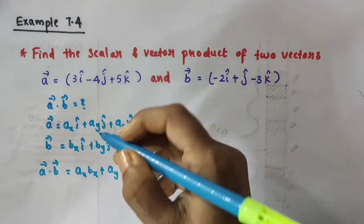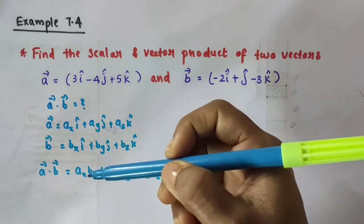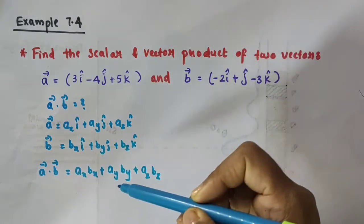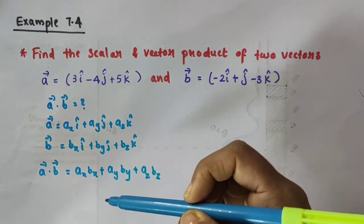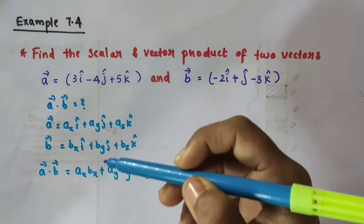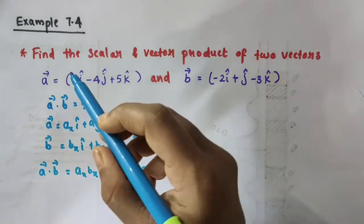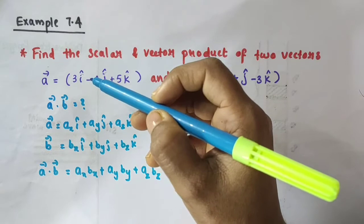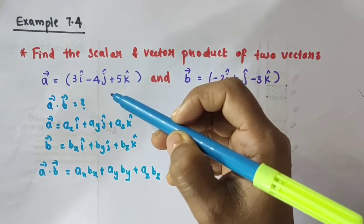We have discussed about the scalar product or dot product in our previous video — how to find the scalar product and how to write vector A dot B in this form. I will provide the link in the description box if you want to watch that. Now, vector A is in the form Ax·i-cap plus Ay·j-cap plus Az·k-cap.